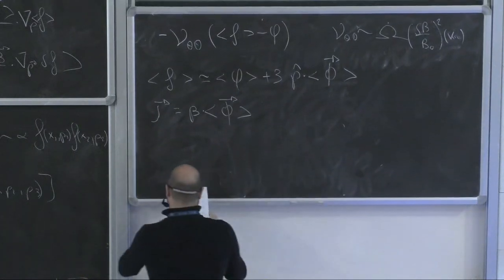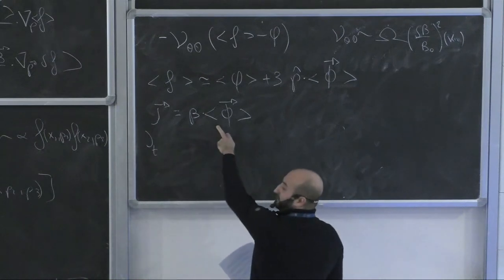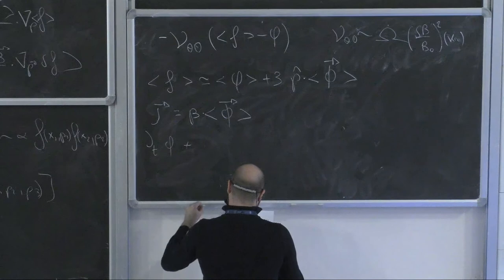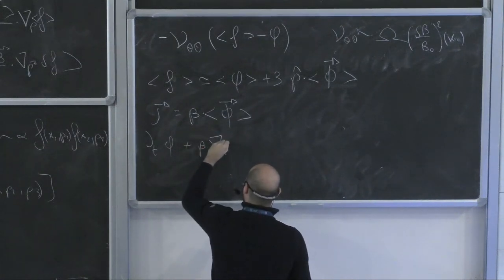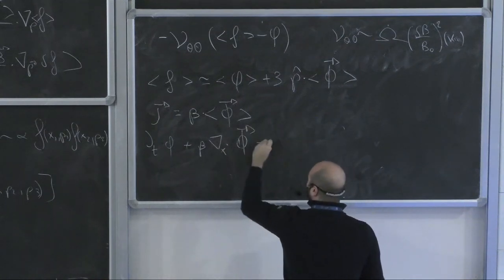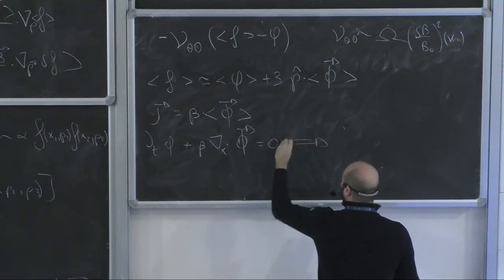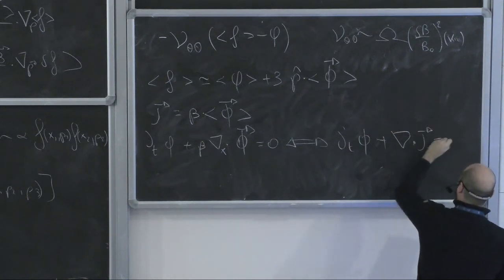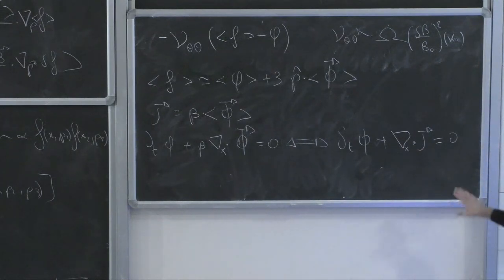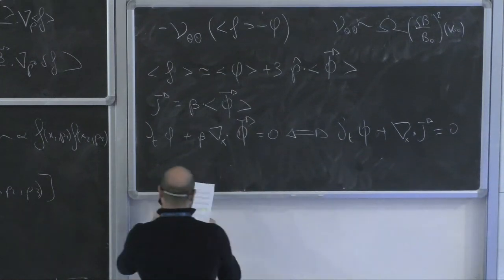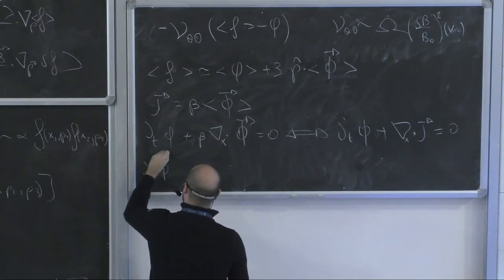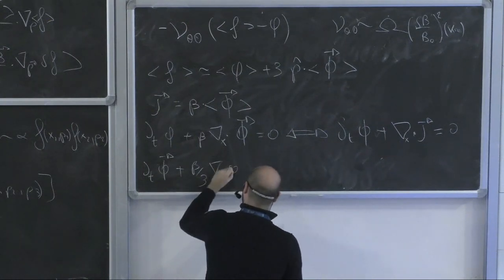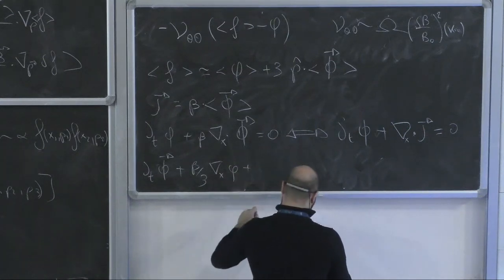These two equations are: first, ∂φ/∂t + β·∇·Φ = 0, which is equivalent to the continuity equation. And second, an equation for the current or dipole term involving its time derivative, a gradient of φ, a cross-product with the gyrovector Ω, and the scattering term −ν_{θθ}·J.